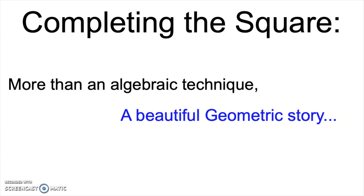What I'm going to be showing you today dates back over 4,000 years to the Babylonians. They were able to find solutions to problems that today we would call quadratic equations. They didn't have that language back then. In fact, they didn't even have algebra as we know it. They lacked symbolic manipulation.